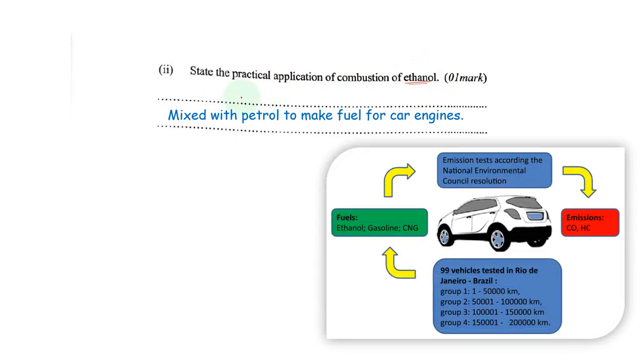State the practical application of combustion of ethanol. Now usually when you are burning this alcohol, the main essence could be to give off heat. So this is normally used in fuels. It can be mixed with gasoline so that it can give some good heat. A mixture of ethanol and petrol can be used for car engines. So usually ethanol can be mixed with gasoline to be used as fuel in car engines.